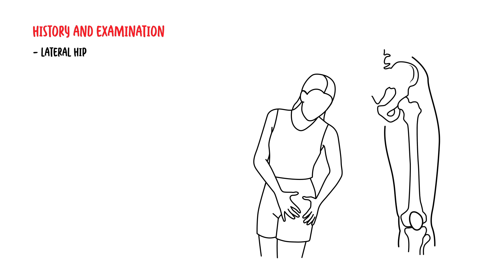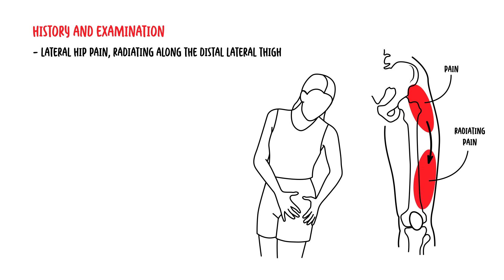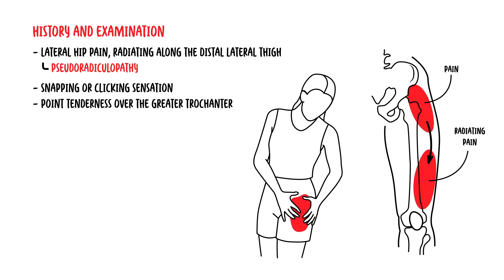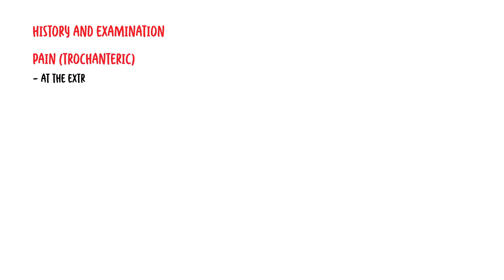On history and examination, the patient normally complains of lateral hip pain. Occasionally, the pain radiates along the distal lateral aspect of the thigh, which is sometimes referred to as pseudo-radiculopathy. The pain itself on the lateral hip may be associated with a snapping or clicking sensation, and there is point tenderness over the greater trochanter. On examination, there is also pain at the extremes of hip rotation, abduction, or adduction.